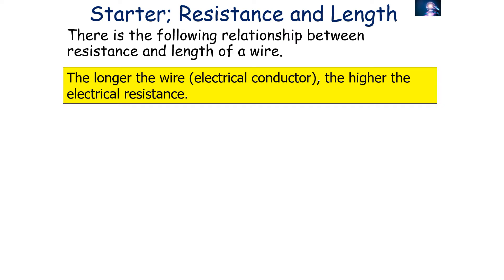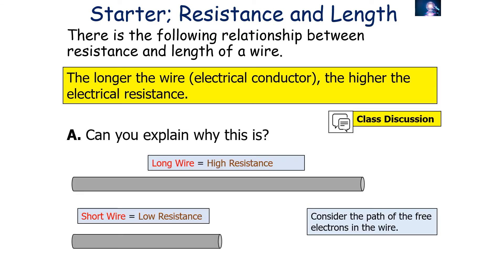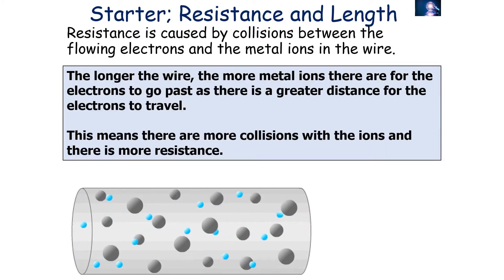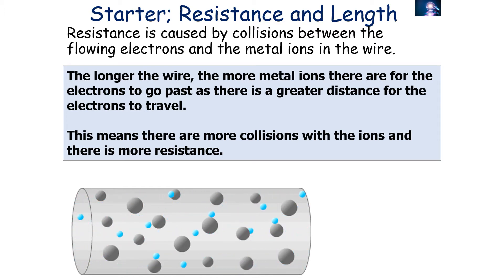So what do we know about resistance and length of a wire? Well, the longer the wire, the higher the electrical resistance. This is because resistance is caused by interactions between the flowing electrons in the wire and the metal ions. The longer the wire, the more metal ions there are for the electrons to travel past, as there is a greater distance for the electrons to travel.